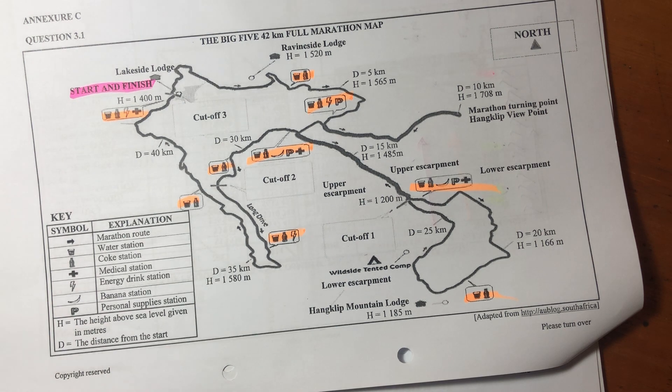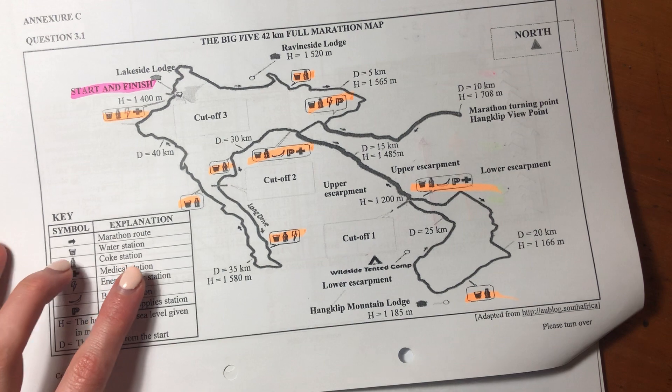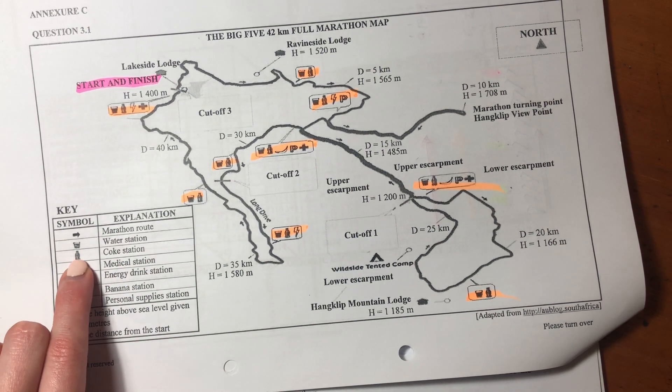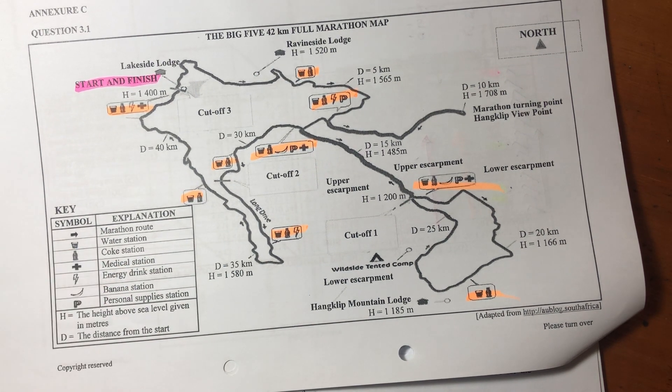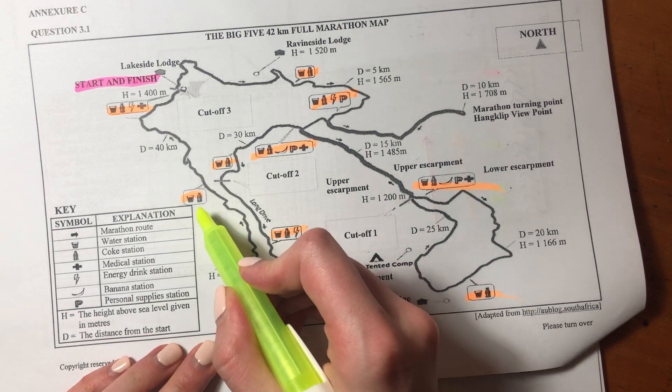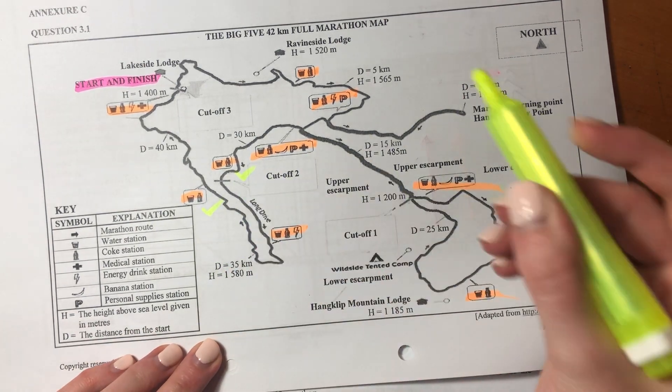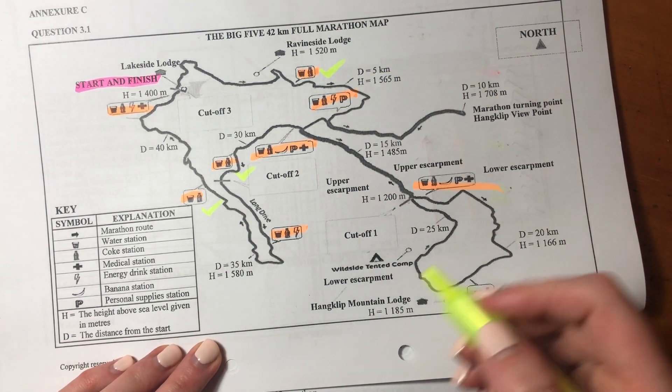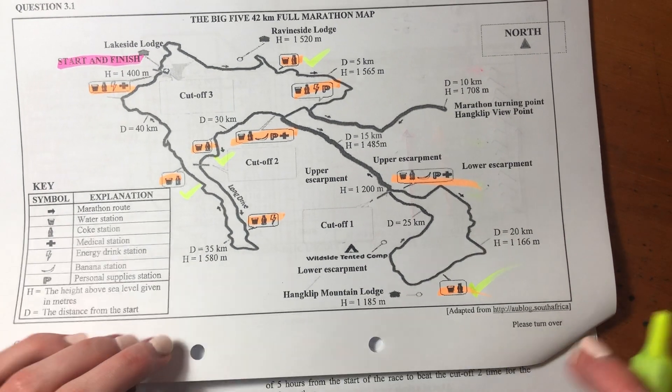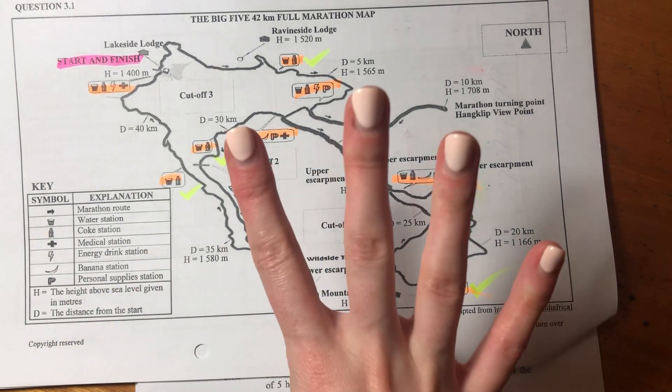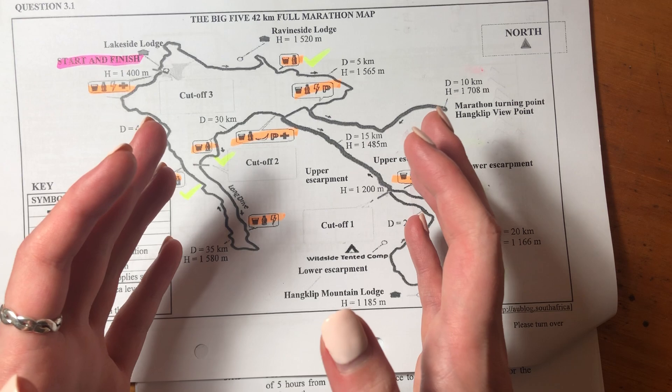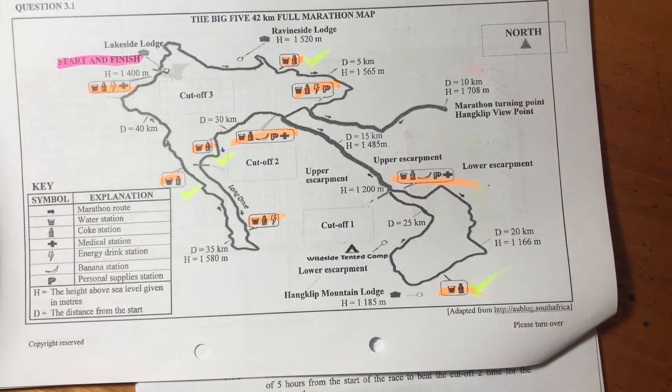So we want all the ones with just coke and water. We see over here, coke is represented by a little coke bottle and water by a little glass of water. So only those two. We see there's one, two, three, four. So we know that four out of the total nine you can get coke and water only.